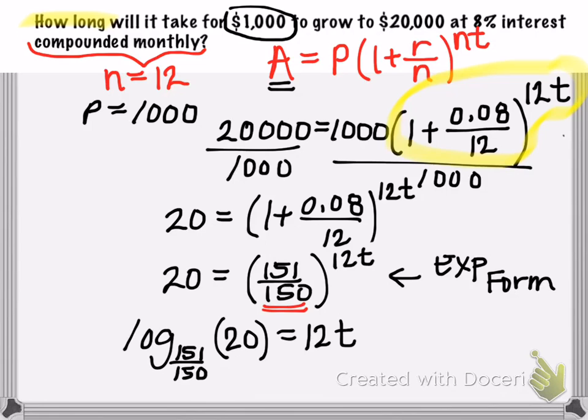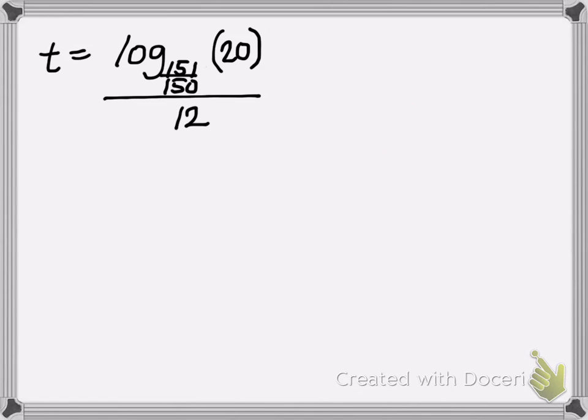So to solve for time, then we would divide both sides by 12. But of course we don't want to leave our answer like this. It would be more beneficial to actually answer how long it takes, how many years to get an estimate. So we need to go to our graphing calculators and input this logarithm.